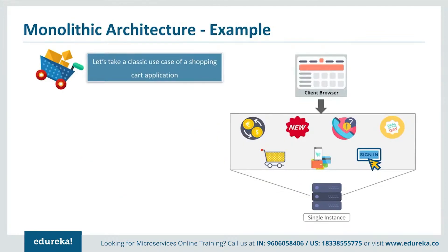Now, let's understand more about monolithic architecture by using a shopping cart application for reference. As a user, when you open a shopping cart application, you see different features for handling wish lists, new labels, new brands in the market, customer services, and so on. But if the developers decided to build this application on a single framework, then all the features were put together on a single database.